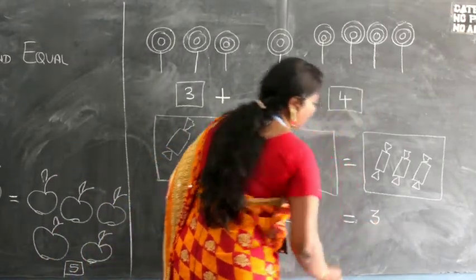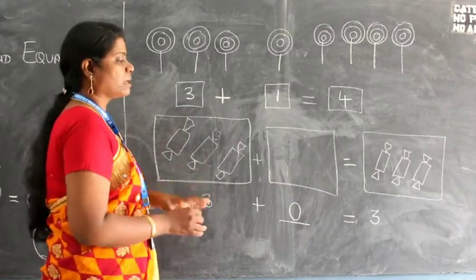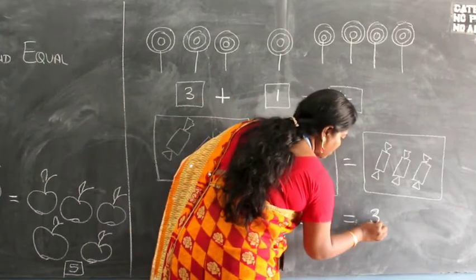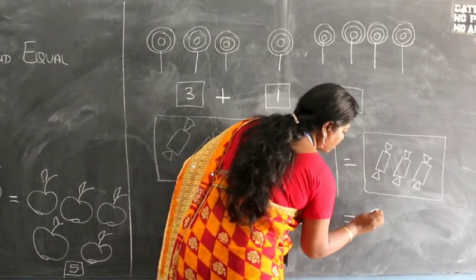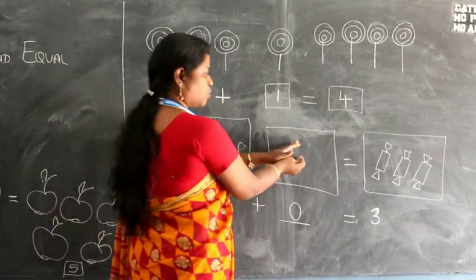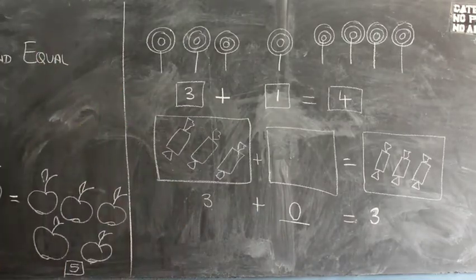So three plus zero is nothing but three. Anything you add, zero if you add with any number or subtract from any number, the number remains the same. So here you get three again because zero is of no value. It has nothing. So there are only three chocolates. Here no chocolates. The total chocolates is only three. So this is how you are going to do addition.